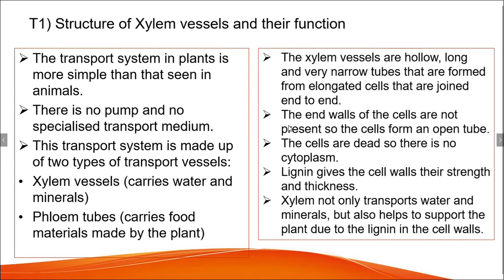Now dealing with the structure of xylem vessels and their function: the transport system in plants is simpler than that seen in animals. There is no pump and no specialized transport medium. This transport system is made up of two types of transport vessels: xylem vessels, which carry water and minerals, and phloem tubes, which carry food materials made by the plant.